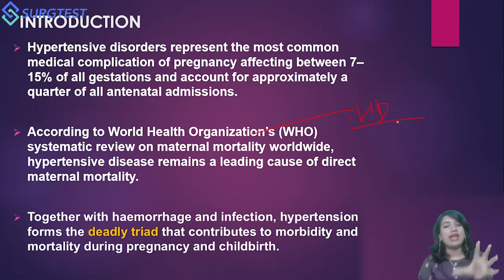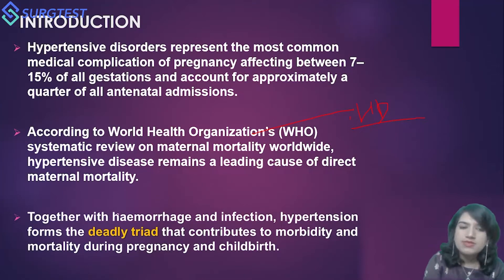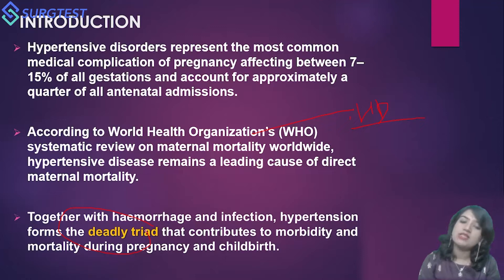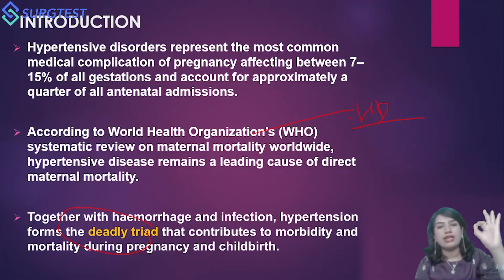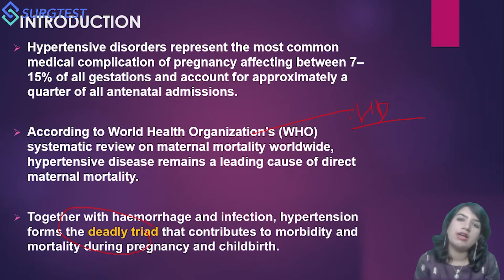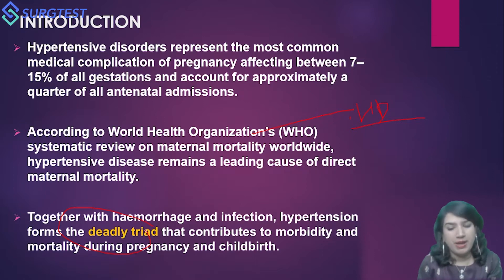Together with hemorrhage and infection, hypertension forms the deadly triad that contributes to morbidity and mortality both during pregnancy as well as childbirth. Hemorrhage, infection and Hypertensive Disorders — this deadly triad is something we need to be aware of and must do everything in our capability to prevent.